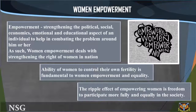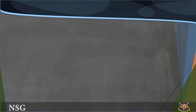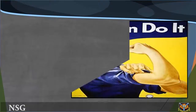The ability of women to control their own fertility is absolutely fundamental to women empowerment and equality. When a woman can plan her family, she can plan the rest of her life. When she is healthy, she can be more productive. And when her reproductive rights — including the right to decide the number, timing, and spacing of her children, and ability to make decisions regarding reproduction free of discrimination, coercion, and violence — are promoted and protected, she has the freedom to participate more fully and equally in society. This freedom leads us to a discussion of gender equality.